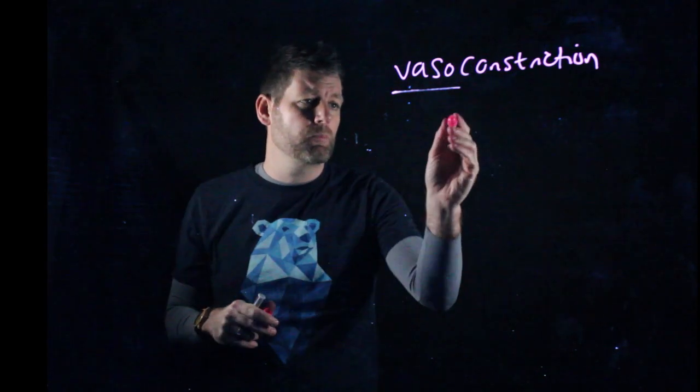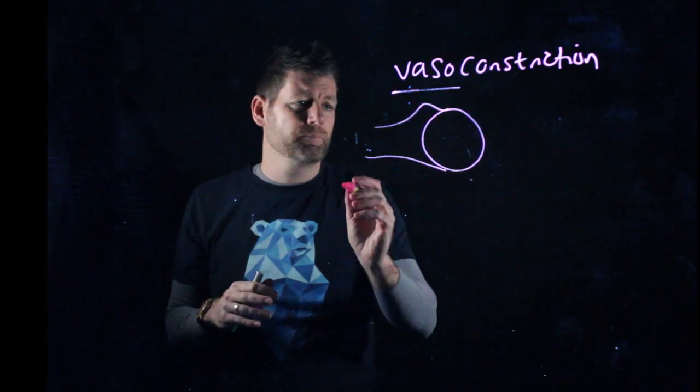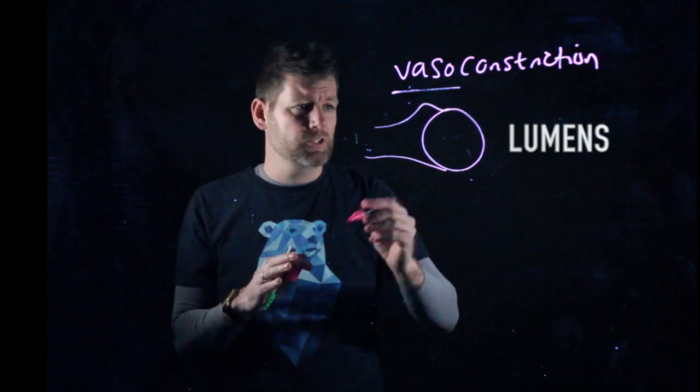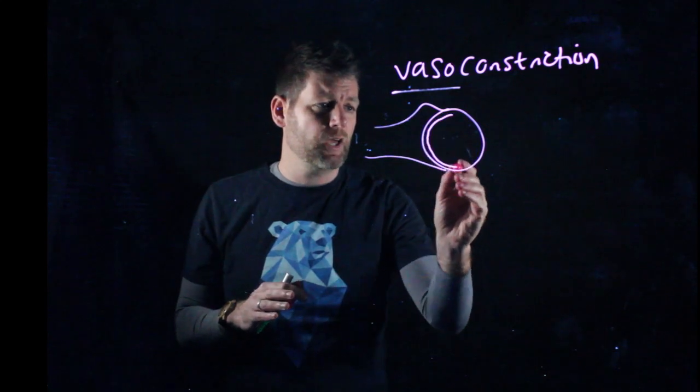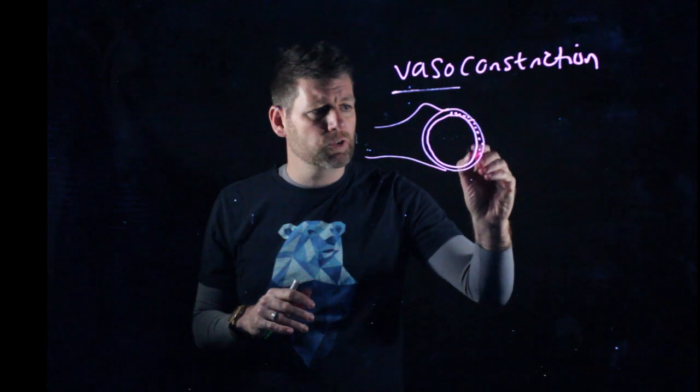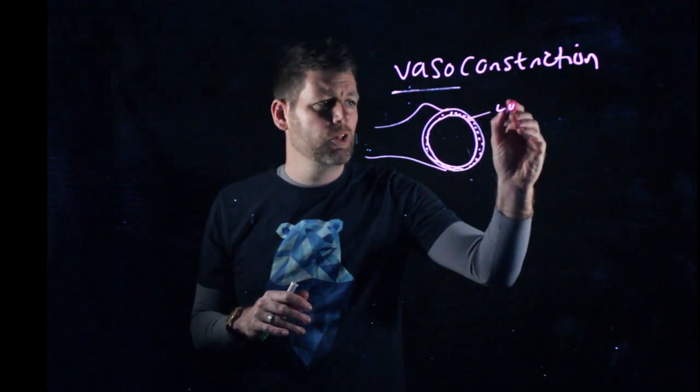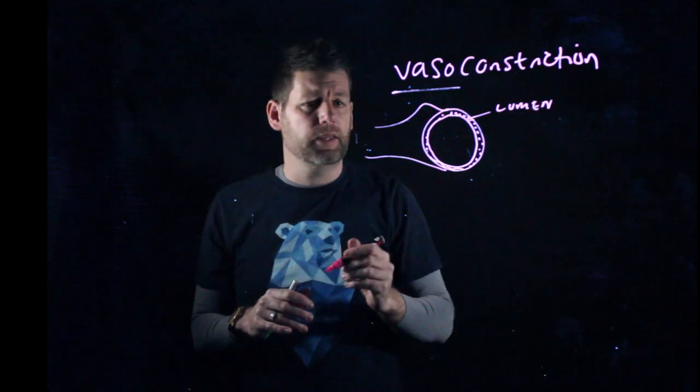And when we talk about vessels we talk about lumens. So imagine I've just taken an artery here and I've cut it in half. This is the cross section and just here we have like a wall. You can see that I'm just kind of putting the dots around the outside. This is the wall. We call this the lumen, L-U-M-E-N.